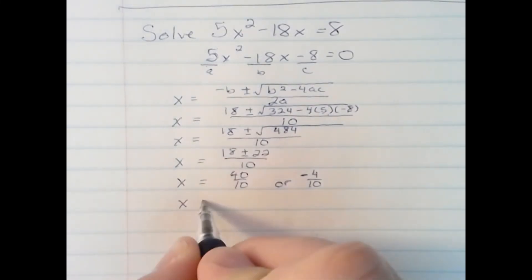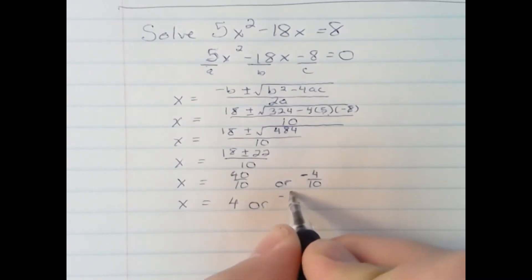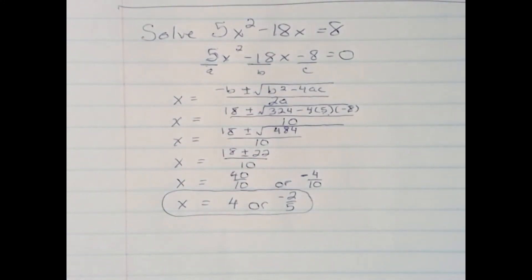I will now simplify those two terms: 4 or negative 2/5. And those are our two answers using the quadratic formula.